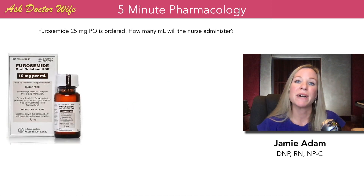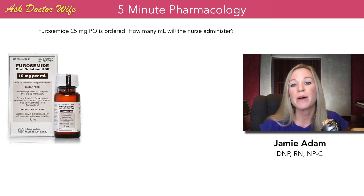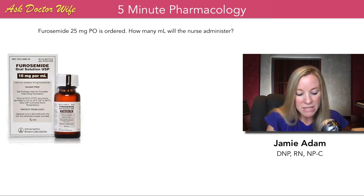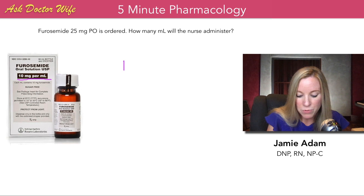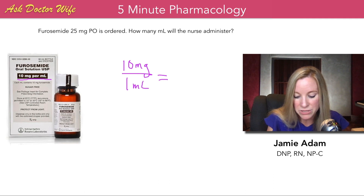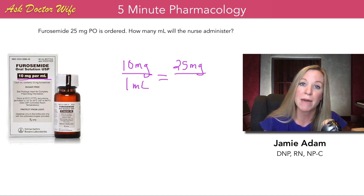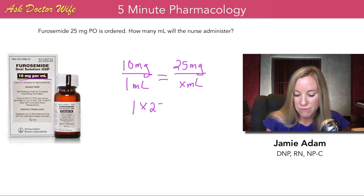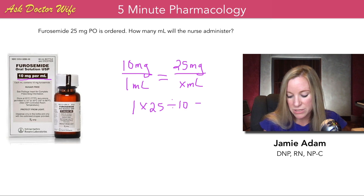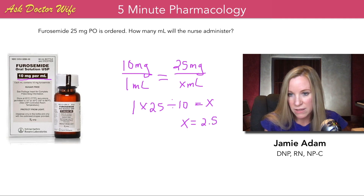Let's look at another one. Furosemide 25 milligrams oral is ordered. How many milliliters will the nurse administer? Looking at the label, we see it comes 10 milligrams per 1 mL. So we set up the ratio: 10 milligrams over 1 milliliter equals 25 milligrams over X mL. Cross multiply and divide: 1 times 25 divided by 10 equals X, which is 2.5 milliliters.